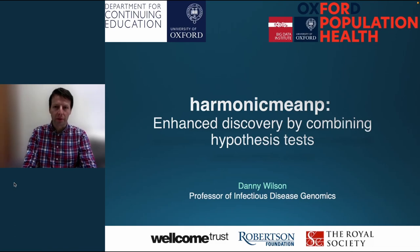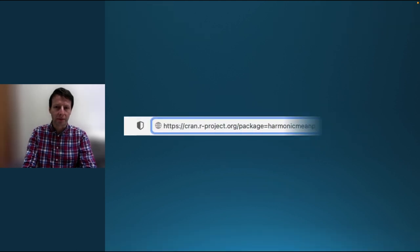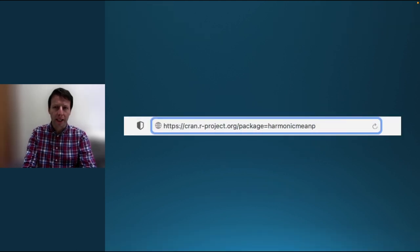Hi, I'm Danny Wilson, professor at the Big Data Institute at the University of Oxford. I'm going to tell you about the Harmonic Mean P R package. The Harmonic Mean P package implements the Harmonic Mean P-Value procedure, or HMP for short, which is a method for combining p-values from hypothesis tests.